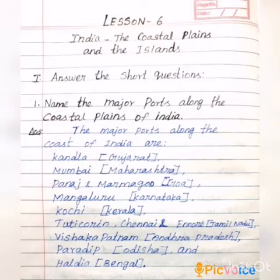Roman numeral 1, answer the short questions. Question number 1: Name the major ports along the coastal plains of India. Answer: The major ports along the coast of India are —